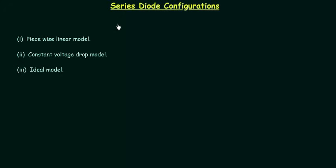In this lecture we need to calculate circuit parameters when a PN junction diode is connected in series. For this we use different circuit analysis methods like KVL (Kirchhoff's voltage law) and KCL (Kirchhoff's current law). We can use these methods only when the diode is replaced with its equivalent model.